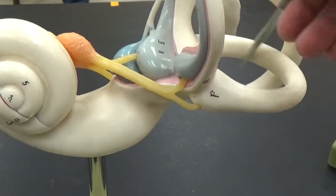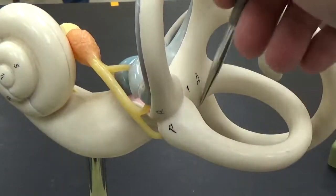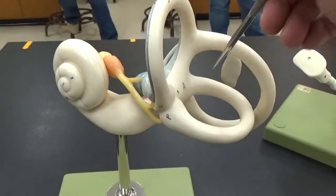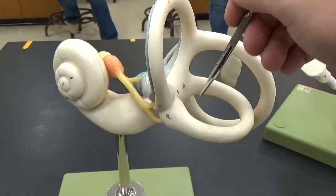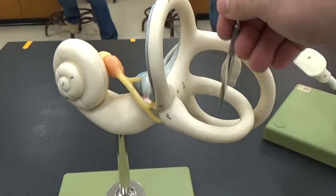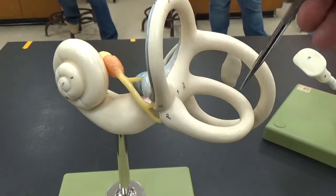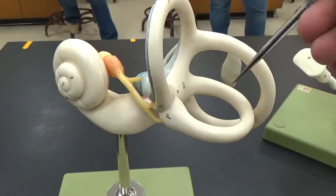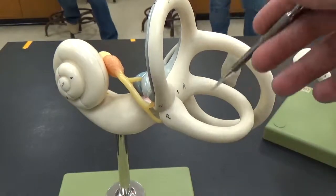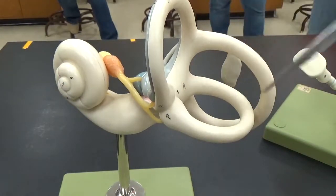You have your semicircular canals on this side of it. I think of them as an X, Y, and Z axis. It's what's giving us our coordination. So if you get vertigo or something like that, it's a problem with this part of the inner ear.